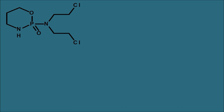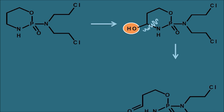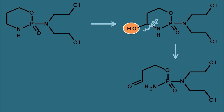Looking at the in vivo metabolism: cyclophosphamide is converted into 4-hydroxycyclophosphamide, where a hydroxy group is attached at the fourth position. This hydroxy group initiates a ring-opening reaction, cleaving the ring at that position. The 4-hydroxycyclophosphamide is then converted into aldophosphamide, where the hydroxy group is converted into an aldehyde functional group.